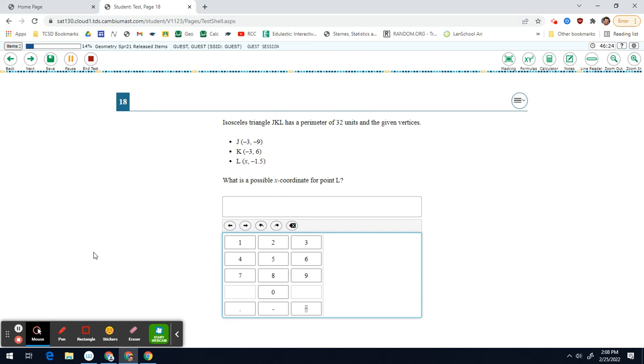Geometry OST spring 21 number 18. Isosceles triangle JKL has a perimeter of 32 units and the given vertices. What is a possible x-coordinate for point L? This is a mixture between topic 4 on triangles and topic 9 on coordinate geometry.